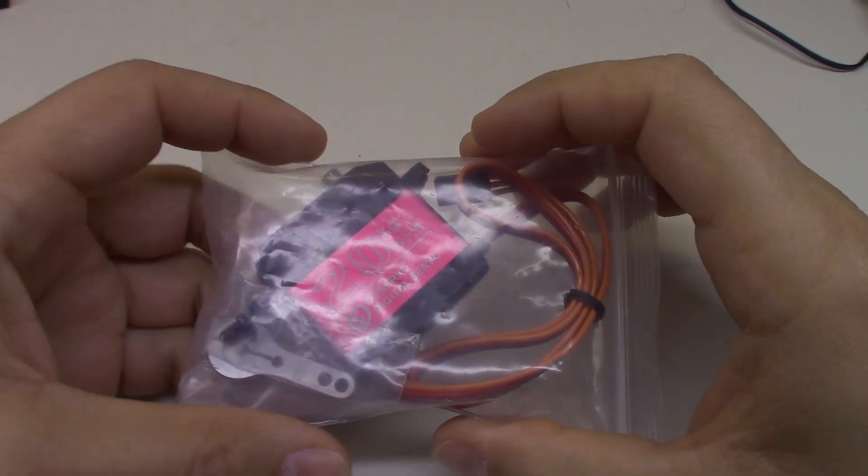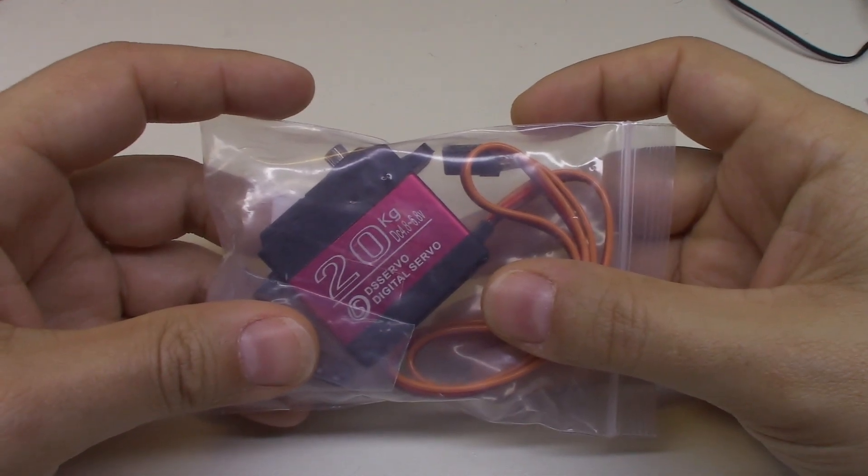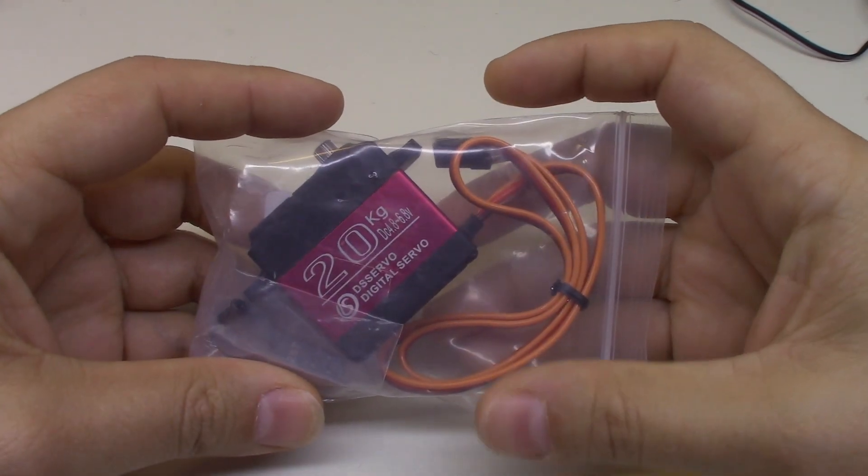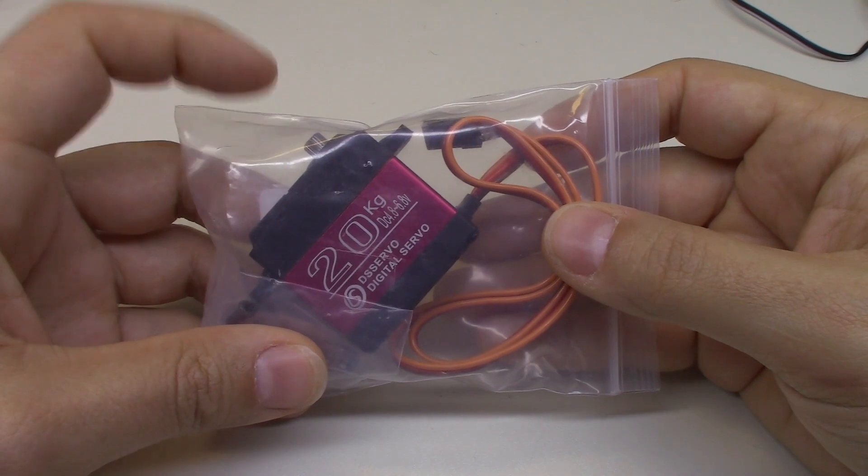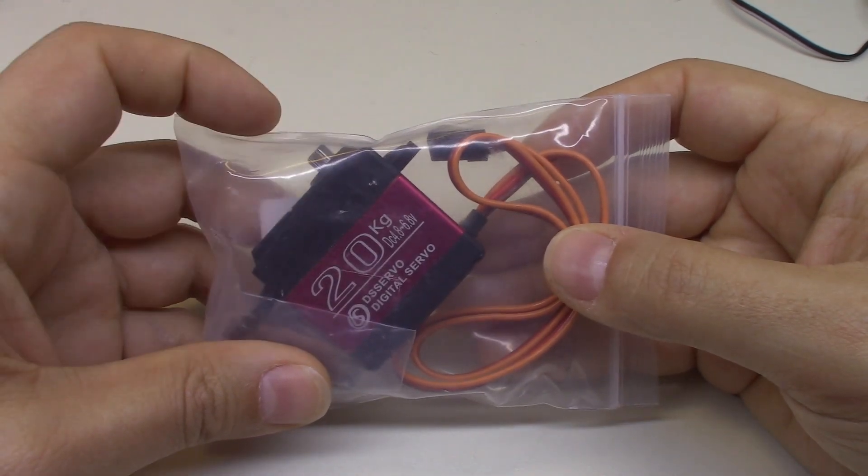So today I want to look at this DS3218 Servo. Mine is the Pro version. They also have just the MG version. The MG version I think has brass and aluminum gears. The Pro version is supposed to have steel gears. We'll take a look at that.